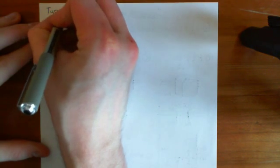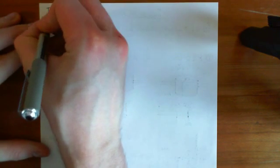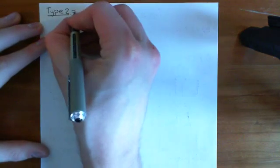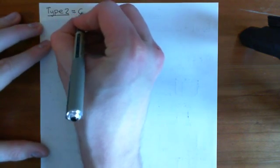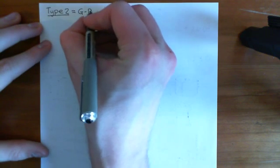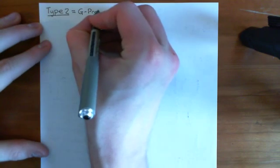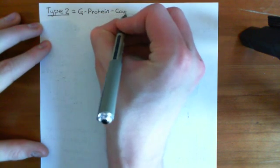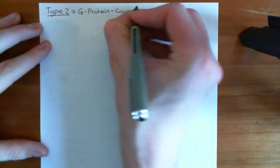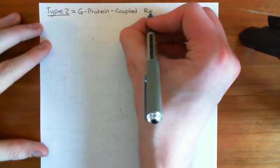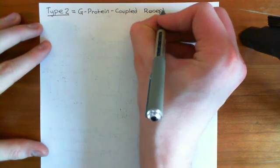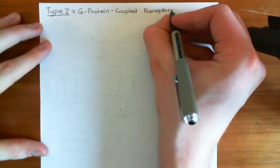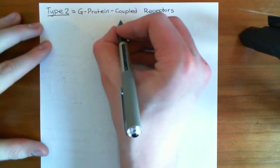We're now going to move on to type 2 receptors. The type 2 receptors are the family of G-protein-coupled receptors. For short, they are often abbreviated to GPCRs — G is for G, P is for protein, C is for coupled, and R is for receptors.